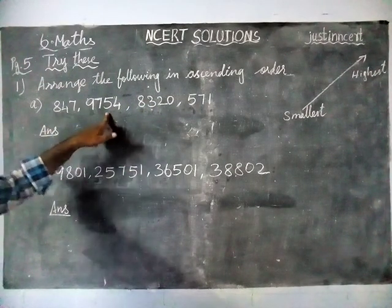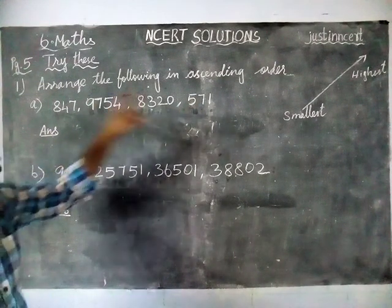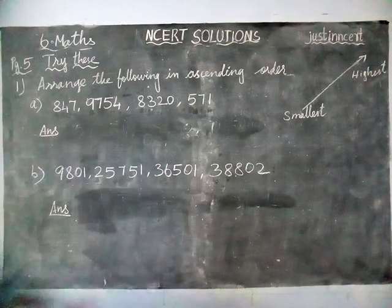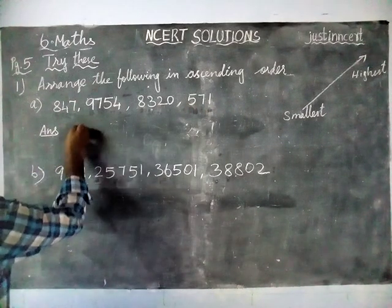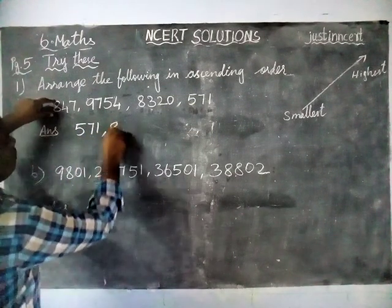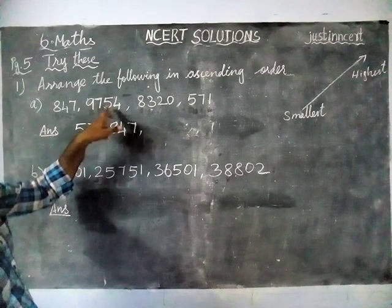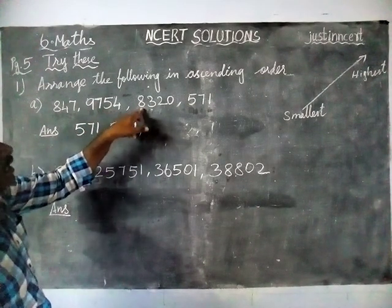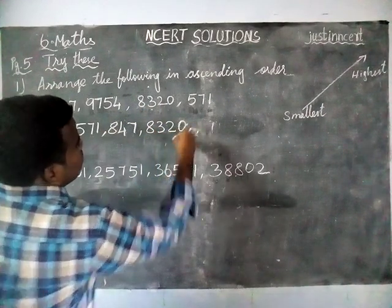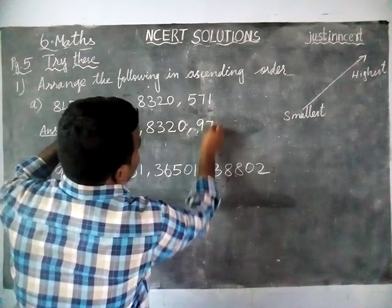First, here we have a 3-digit number, 4-digit, 4-digit, and 3-digit. So we have two 3-digit numbers. In these two 3-digit numbers, 571 is the smallest number. So 571 comes first. Next 3-digit number is 847. Next we have two 4-digit numbers; in these, the smallest number is 8320, so we write 8320 at third place. Then last, 9754.